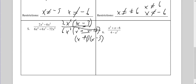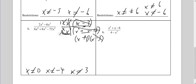Before I do any canceling, I need to do my restrictions. x cannot be 0. For x plus 4, x cannot be negative 4. For x minus 3, x cannot be 3. Now the fun begins — I can cancel the x minus 3s. I can cancel the x squareds. 2 reduces to 1 and 3. On the bottom I still have a 3 and an x plus 4. Notice how everything cancels on the top — you can't leave it blank, so you put a 1 there. That's your answer.